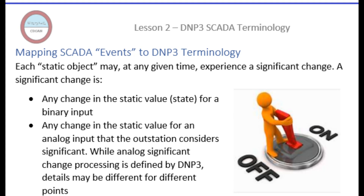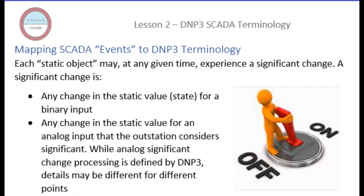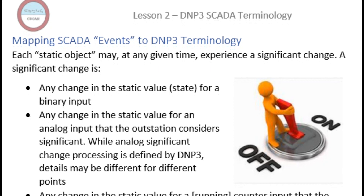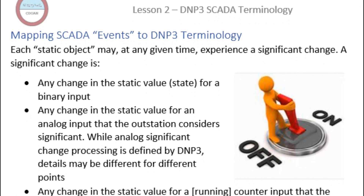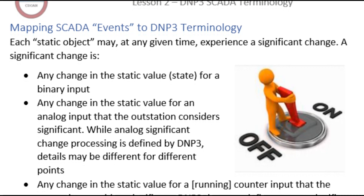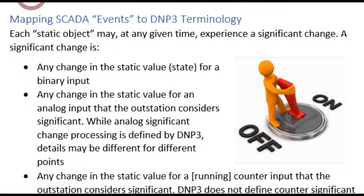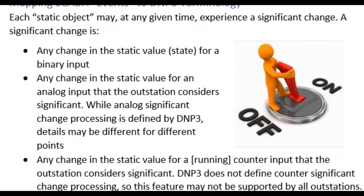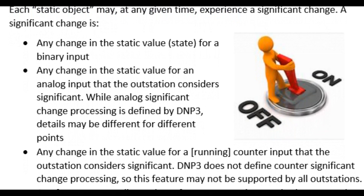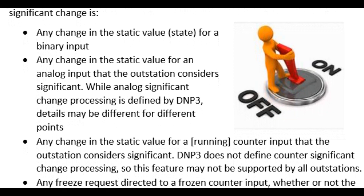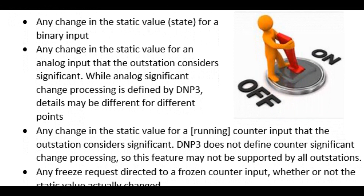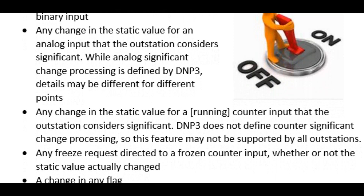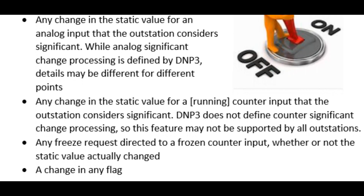Each static object may at any given time experience a significant change. A significant change includes: any change in the static value or state for a binary input; any change in the static value for an analog input that the outstation considers significant (as defined by DNP3); and any change in the static value for a running counter input that the outstation considers significant. Note that DNP3 does not define counter significant change processing, so this feature may not be supported by all outstations.